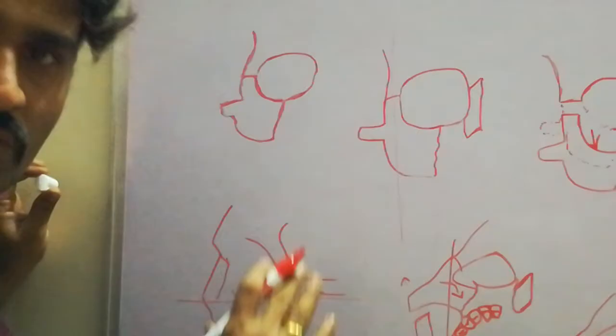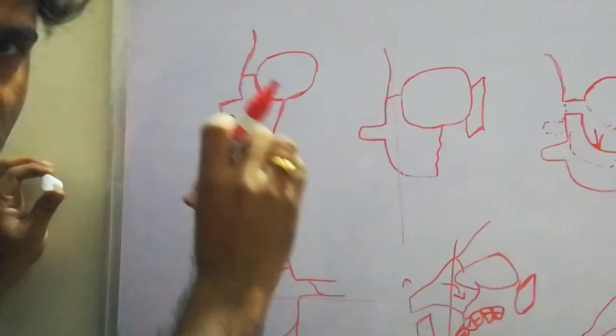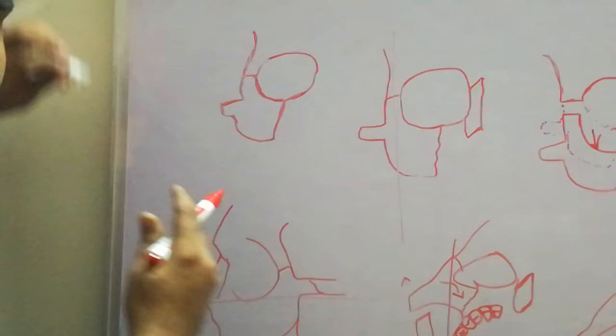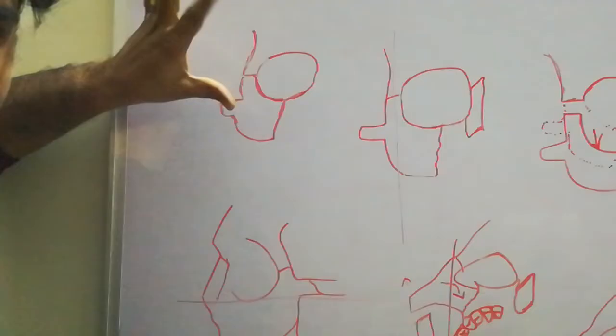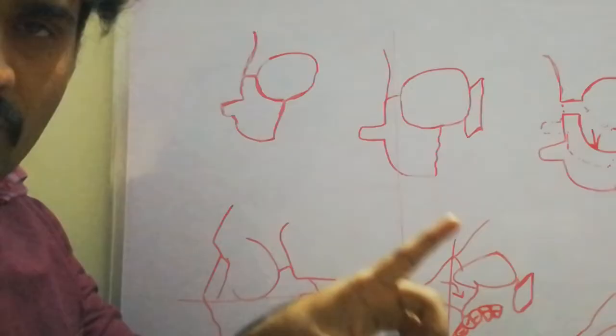The frontal process of the zygoma bone fuses with the zygomatic process of the frontal bone — that is above the orbit. The frontal bone gives one process called the zygomatic process. Both these processes unite to form the frontozygomatic suture. So, the first process — the frontal process of the zygomatic bone — unites with the zygomatic process of the frontal bone to form the frontozygomatic suture.